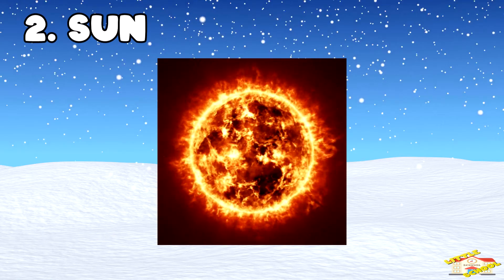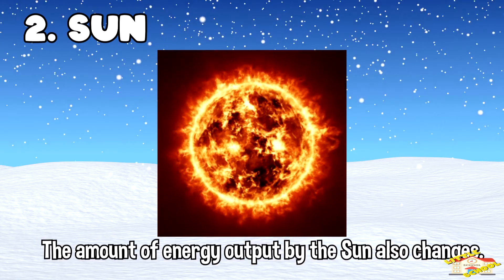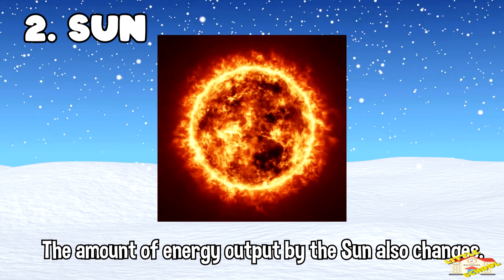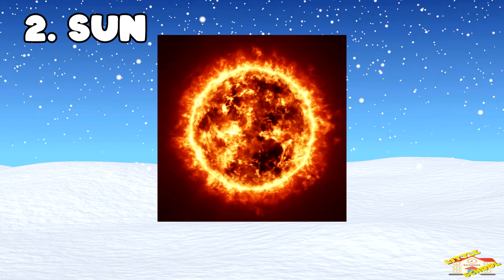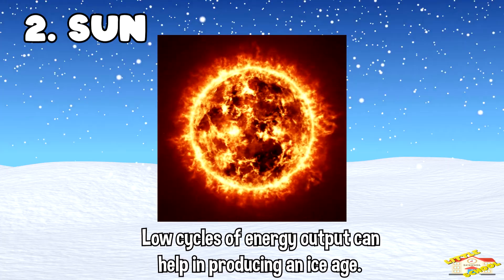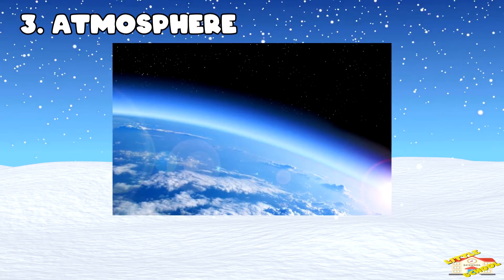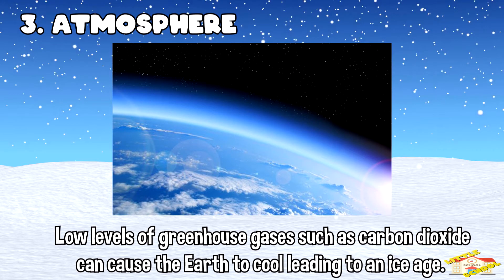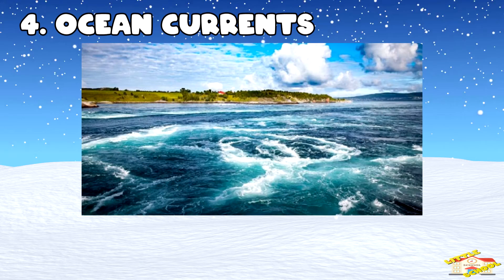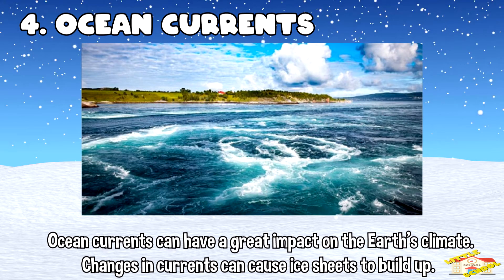The sun: the amount of energy output by the sun also changes. Low cycles of energy output can help in producing an ice age. The atmosphere: low levels of greenhouse gases such as carbon dioxide can cause the Earth to cool, leading to an ice age. Ocean currents: ocean currents can have a great impact on Earth's climate, and changes in currents can cause ice sheets to build up.